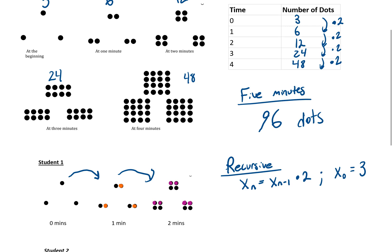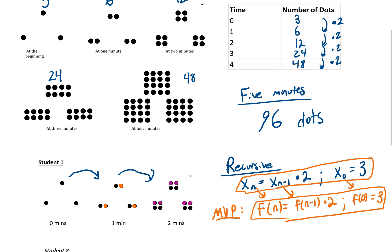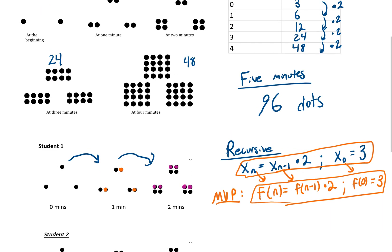Here's another way of writing that exact same formula using MVP notation, which you'll see in your RSG: f of n equals f of n minus 1, times 2, and f of 0 equals 3. These two representations are equivalent — one is the more North Carolina way of writing it that you might see on the EOC, and the other is the MVP way of writing it.